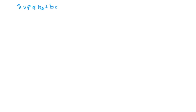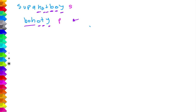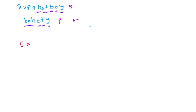Let's say we have S = S-U-P-A-H-O-T-B-O-Y, and we have P = B-O-H-O-T-Y. What we want to create is some rearrangement of S that also contains P as a substring. So let's take out all the elements of P from S. We can take B-O-H-O-T-Y, leaving the remainder as S-U-P-A.